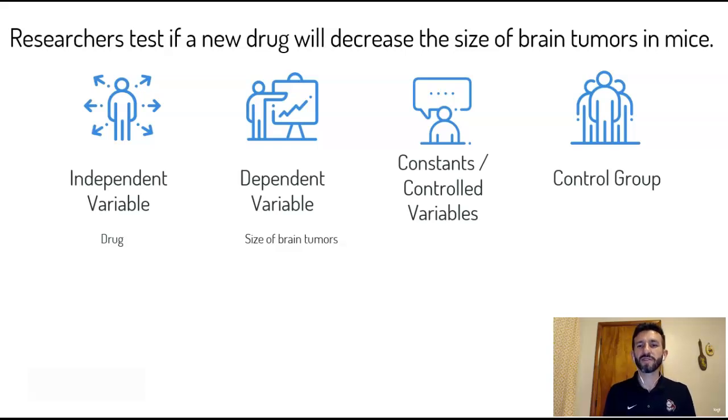What are things that we have to keep constant the whole time? Well, there are many, but for example the species of mice, the food and water they have, the environment that they are in, the amount of drug administered. You can't give one mouse a ton and one a little bit and hope for the same results. Unless you want to test the amount of drug administered, so that would be an independent variable. But as the sentence is shown, it should be a constant.